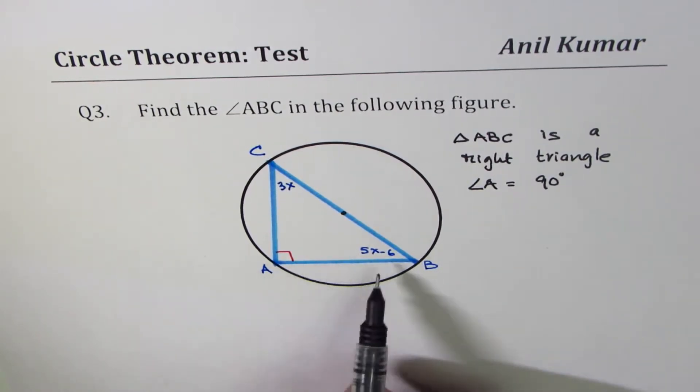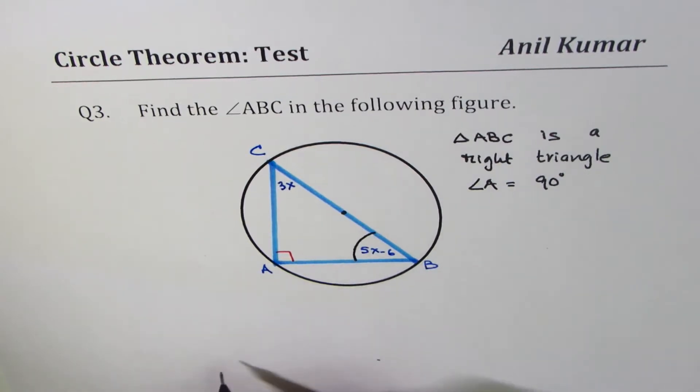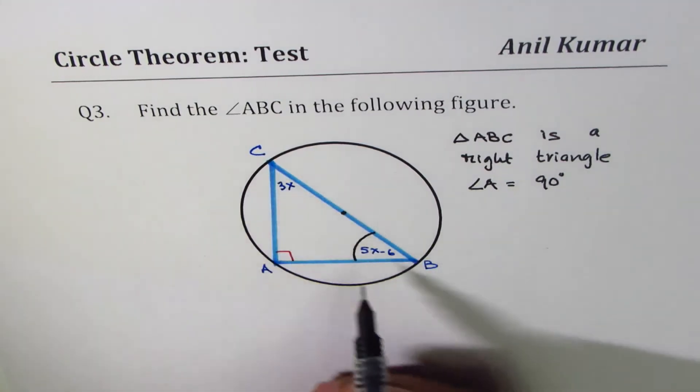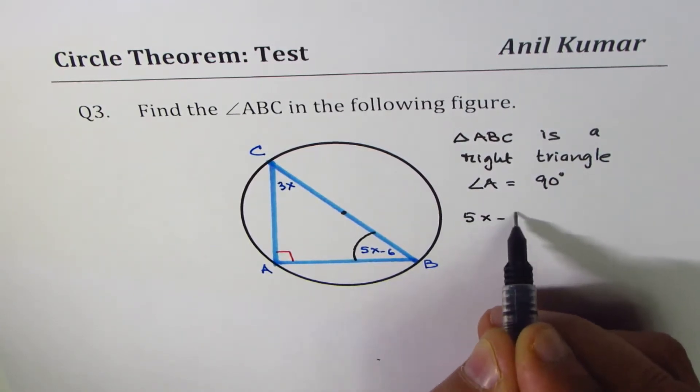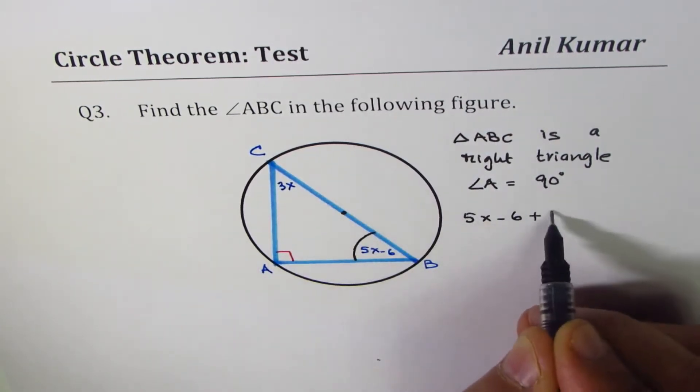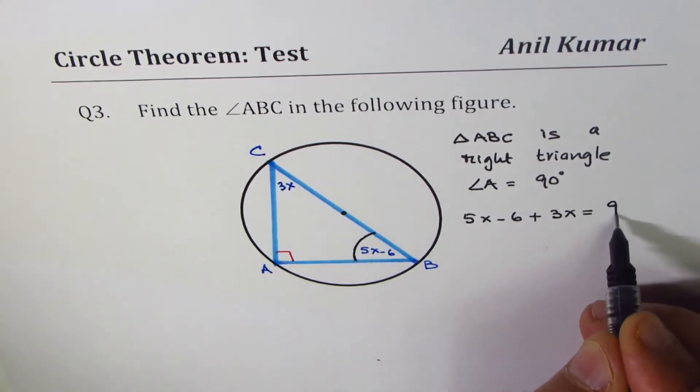We need to find angle ABC, that is to say we have to find this angle. The sum of angle B and C is 90 degrees. So we know 5x minus 6 plus 3x should be equal to 90.